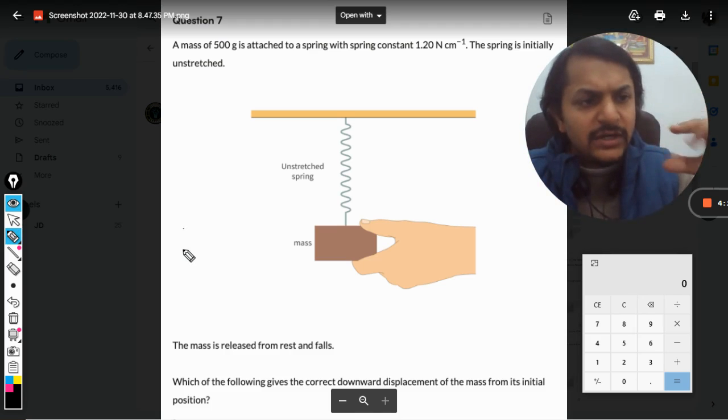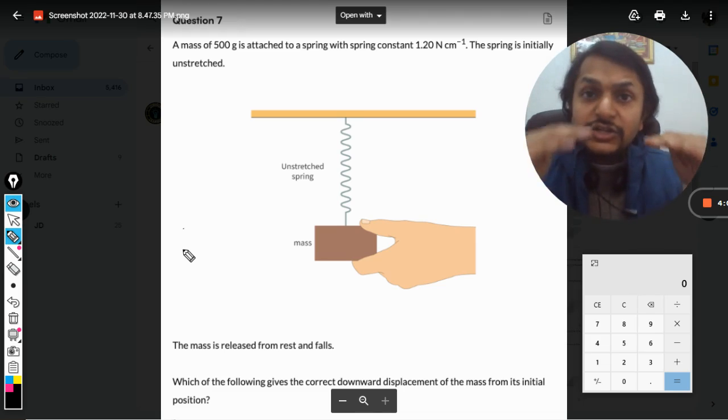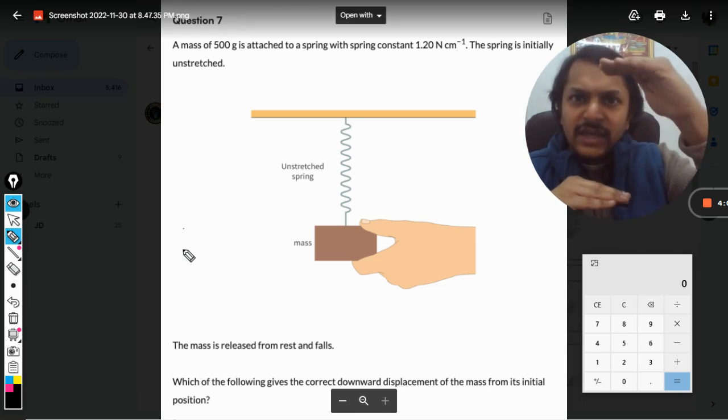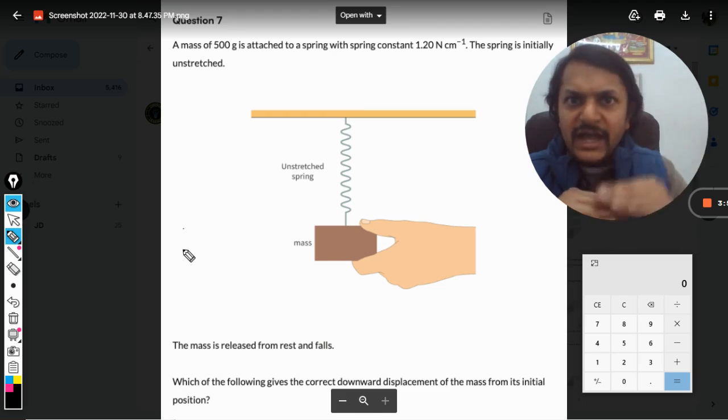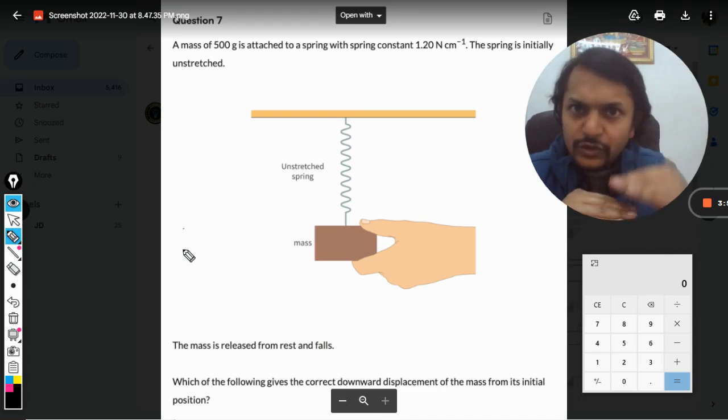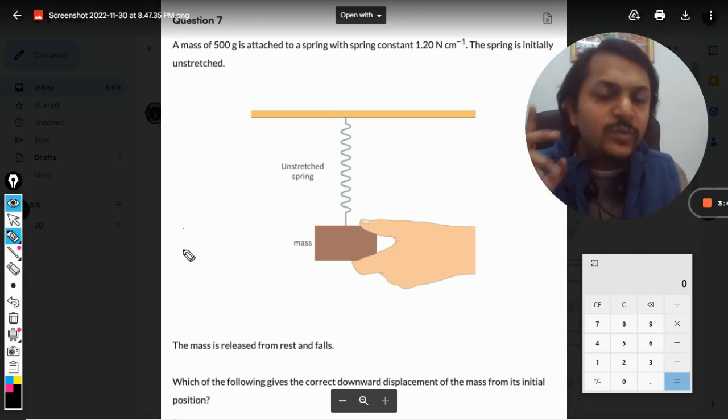Let us say I am holding this mass and I just leave it. So what happens is it moves down, goes down, and it comes back and settles somewhere here. So the lowest point is this one, but it hits the lowest point and comes back a little up. These two positions are completely different. We need to find the lowest point and the equilibrium position. The lowest point is not the equilibrium position.